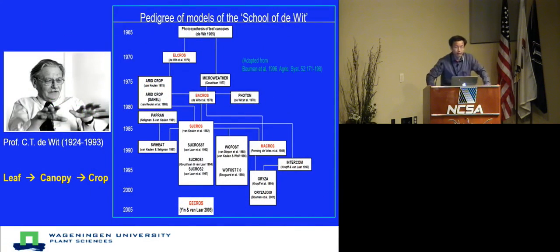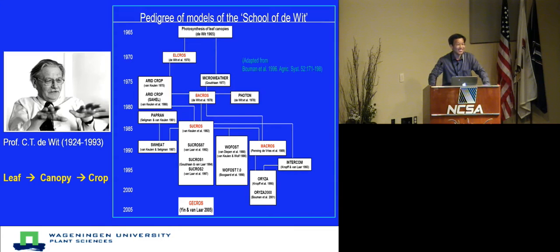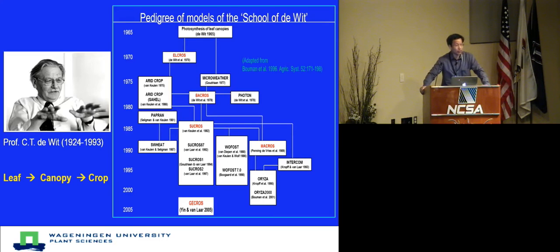Wageningen University and Research Center has a long history in producing all sorts of crop models, under the leadership of Professor Kista-Witt, who unfortunately died many years ago at a very young age. He was a pioneer of leading crop modeling research in the world.